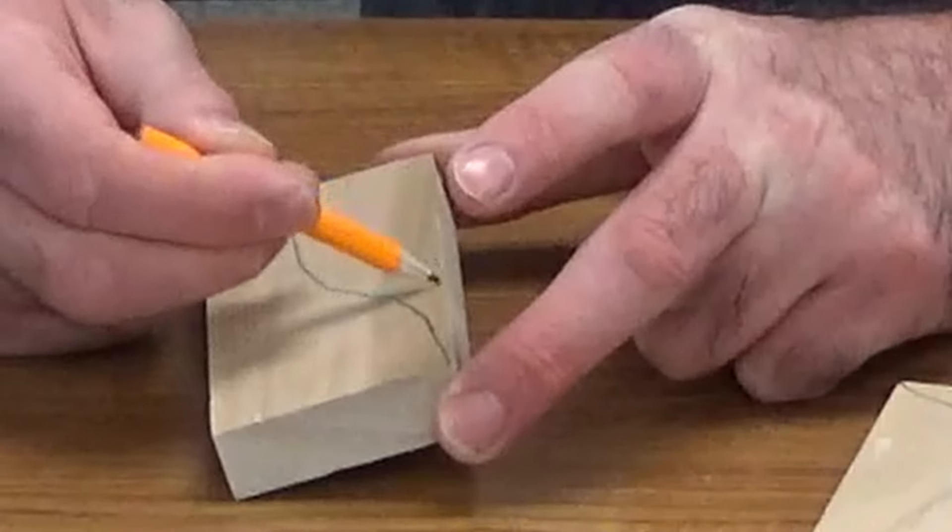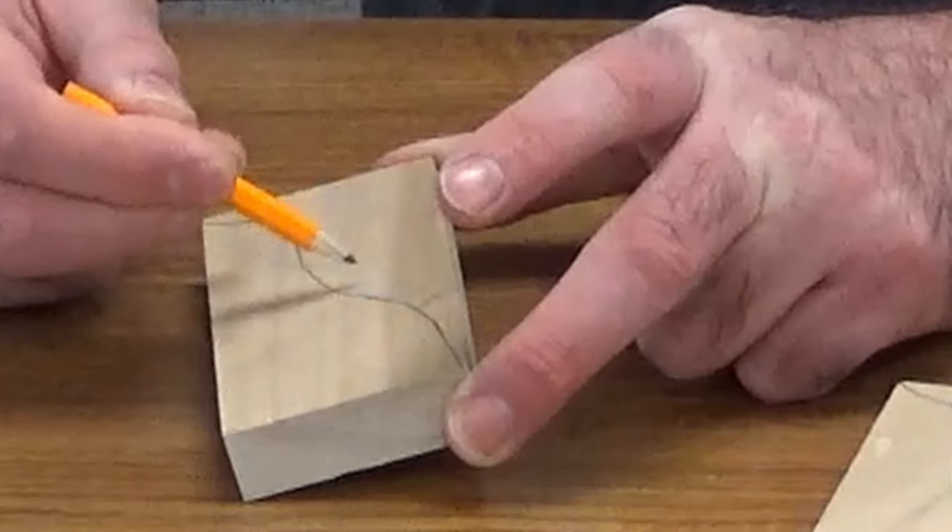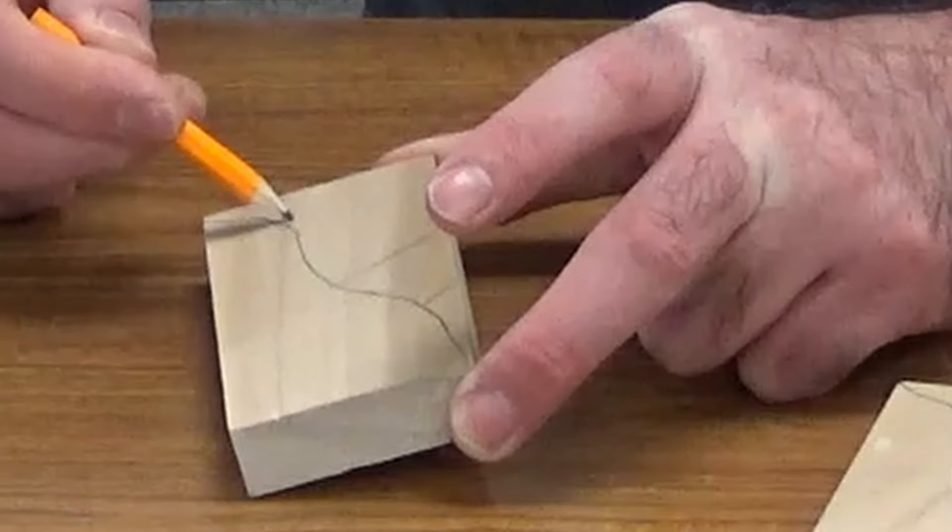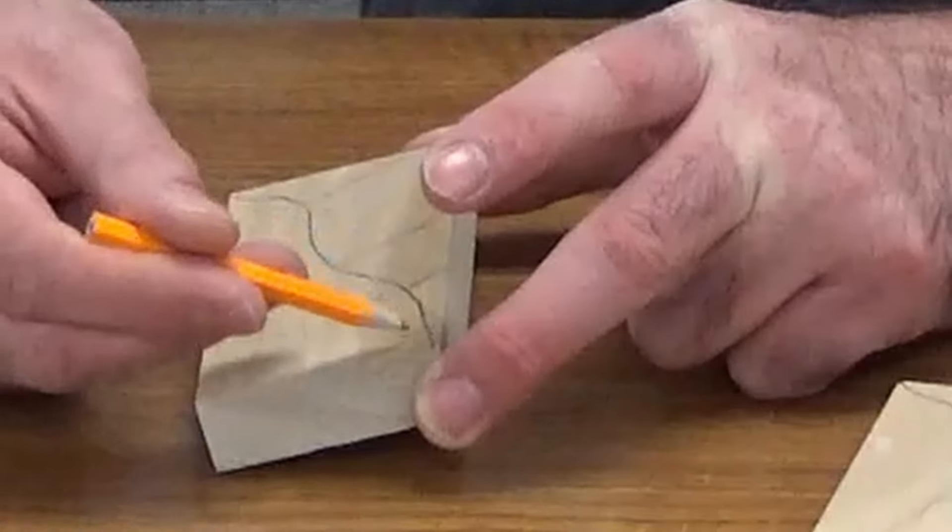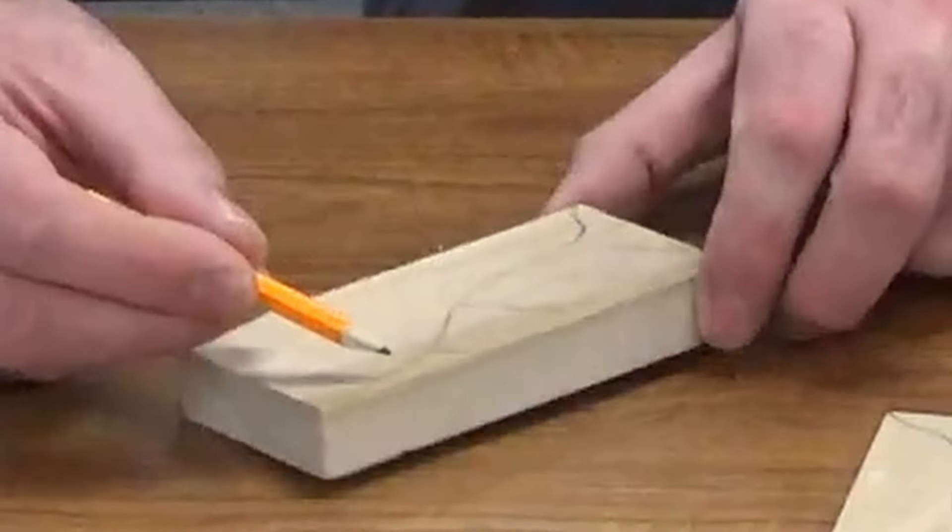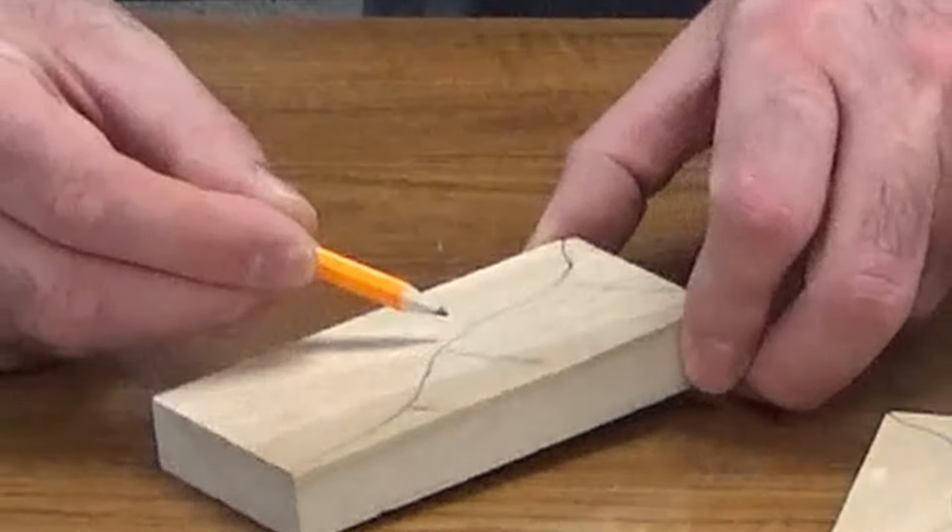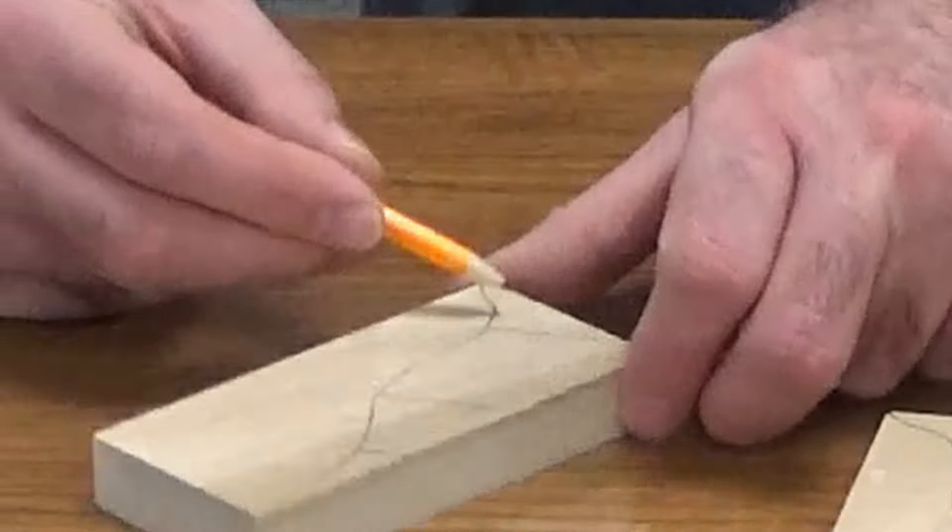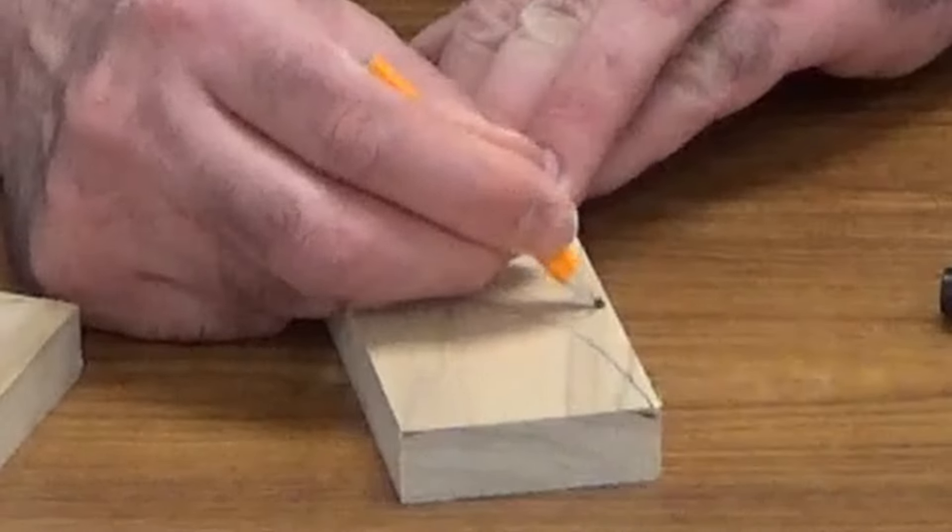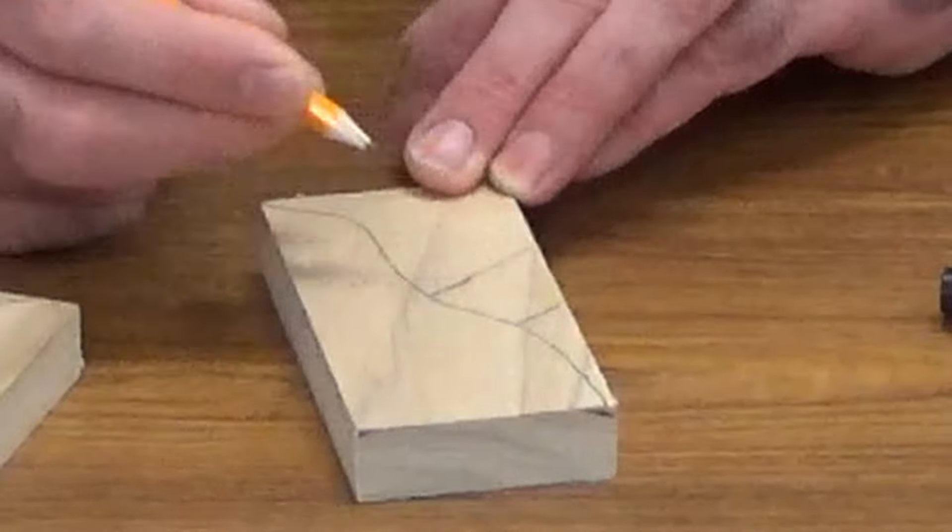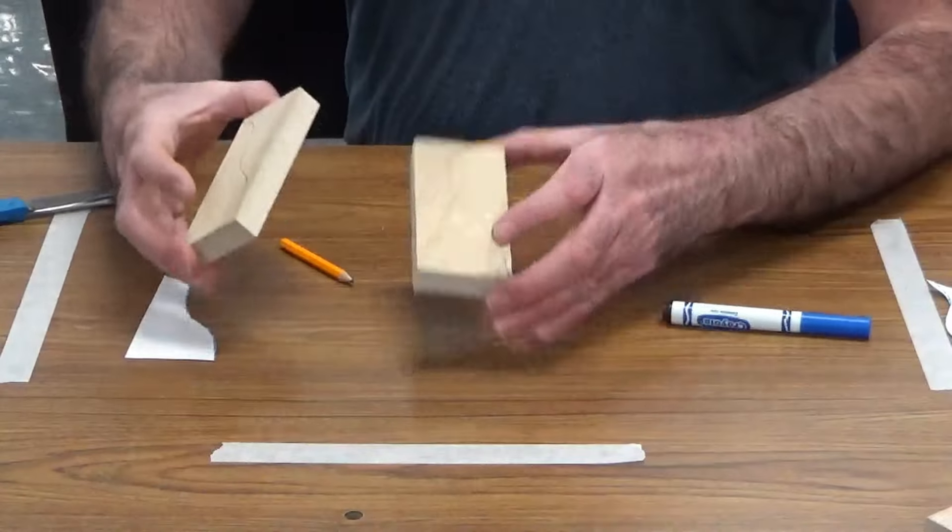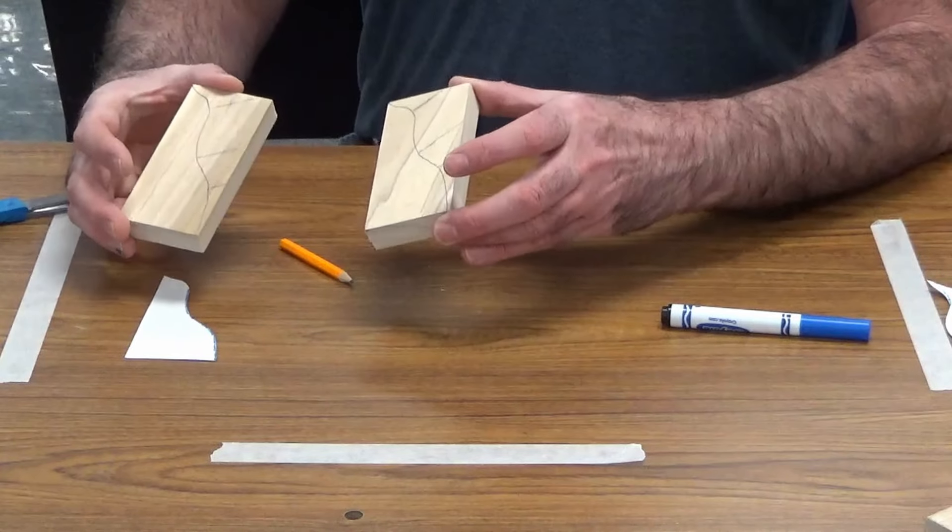At areas where there are curves, you want to create relief cuts. Hopefully you remember that from the CO2 card. So, anywhere where I can see that I'm going to be turning the piece of wood to create a cut, like I turn here, and then I'm going to turn there, and then I'm going to turn there, those are areas where I want to create relief cuts. And now we're ready to take these to the scroll saw and cut them out.